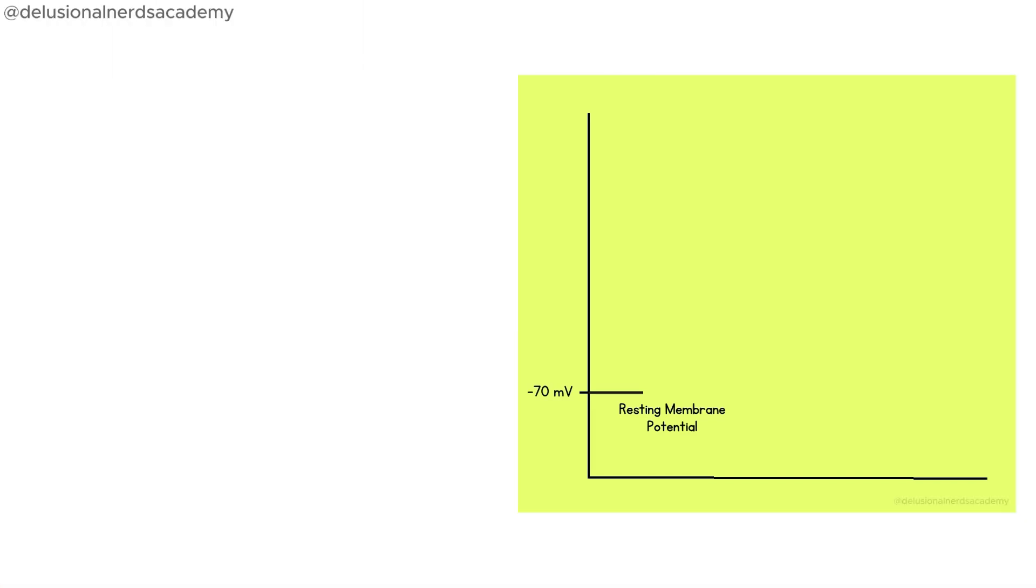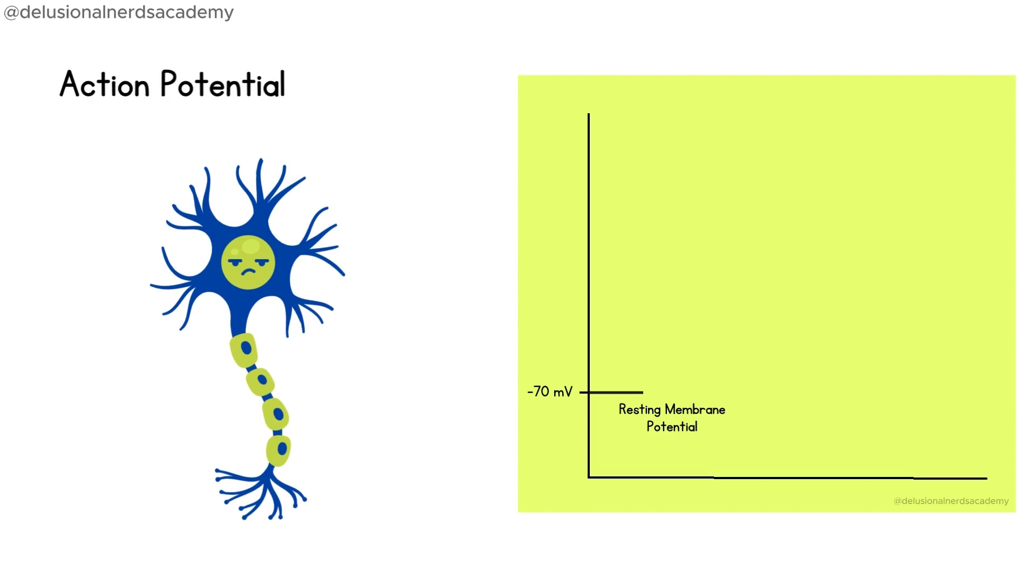A neuron needs a specific amount of positive charge in order to conduct an electrical impulse, or what we call an action potential. The external stimulus brings a positive charge to excite the neuron, but the neuron doesn't get excited so easily. It needs a specific amount of positivity to carry the impulse.